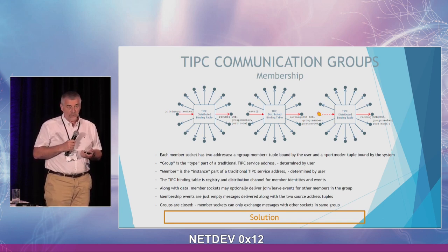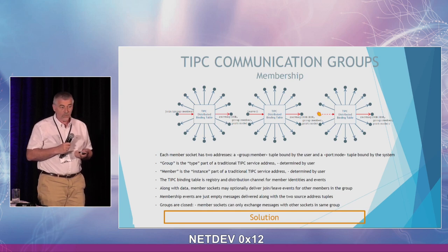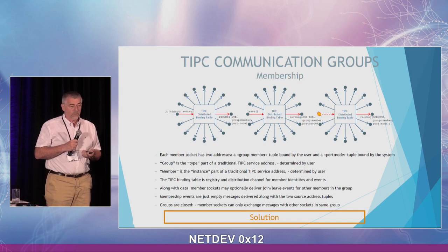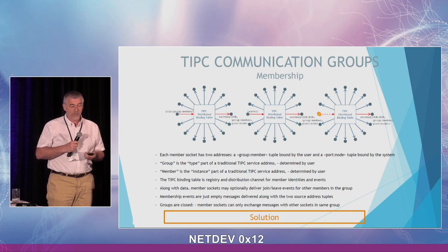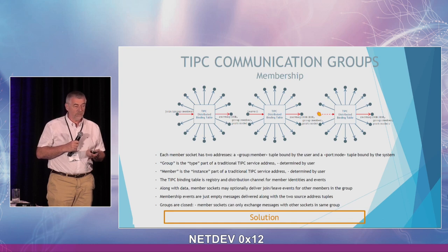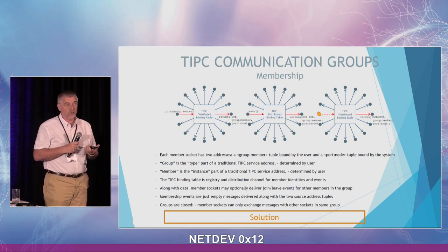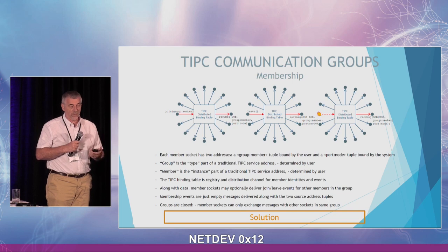Since the socket knows about all other members, the user can also learn about them. The user can subscribe for new members joining or members disappearing, and will receive an event — an out-of-band message — accompanied with the two source addresses of the new or disappeared member. The group and member identifiers are essentially what we called a service address previously: a type and an instance address, just named differently in this context.